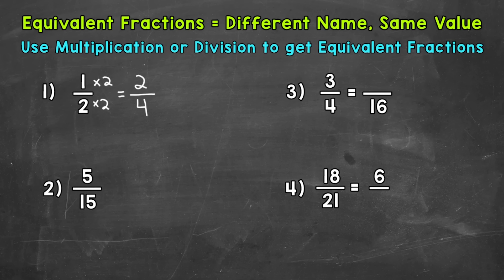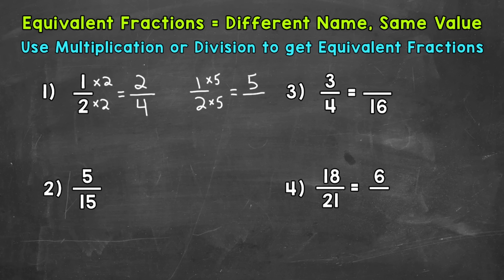Those fractions have different names — we say them differently, 1 half and 2 fourths — but they have the same exact value. Let's try another example. Let's multiply both our numerator and denominator by 5: 1 times 5 is 5, and 2 times 5 is 10. So 5 tenths is equivalent to 1 half.